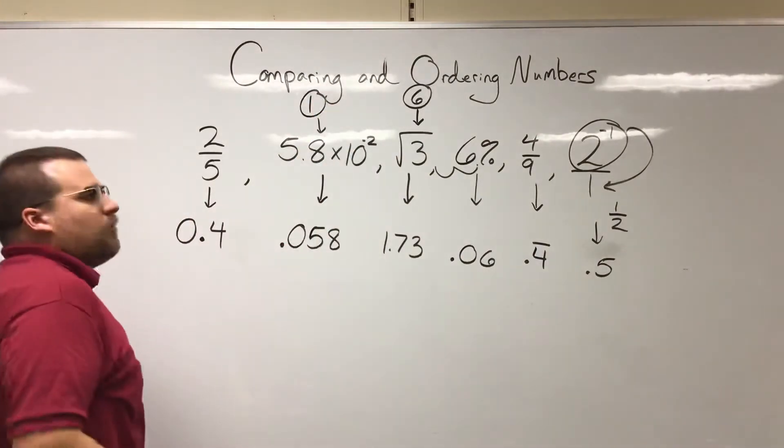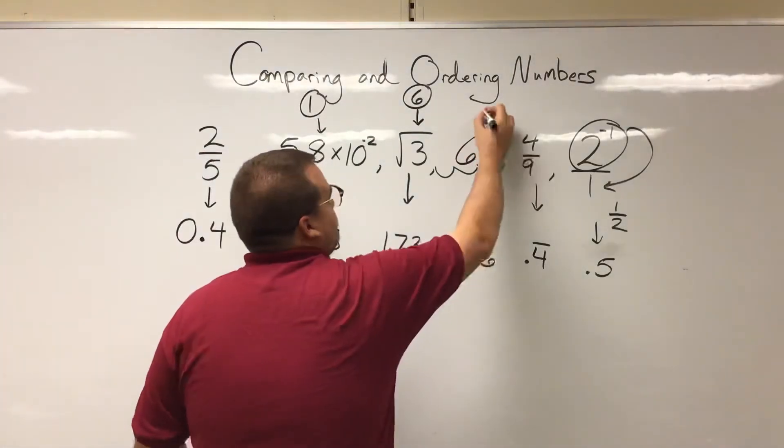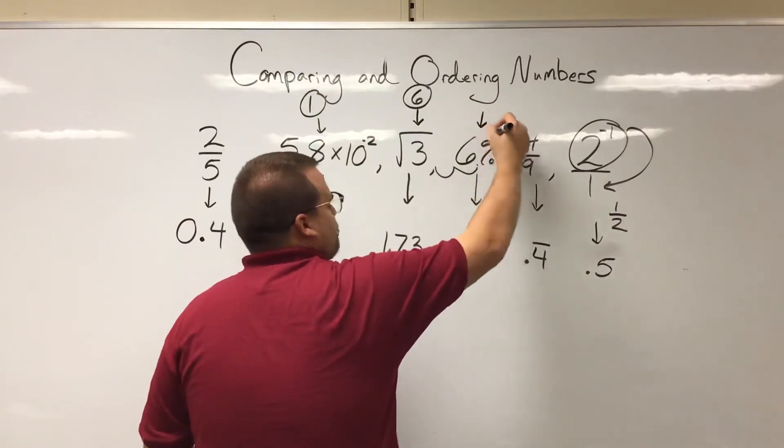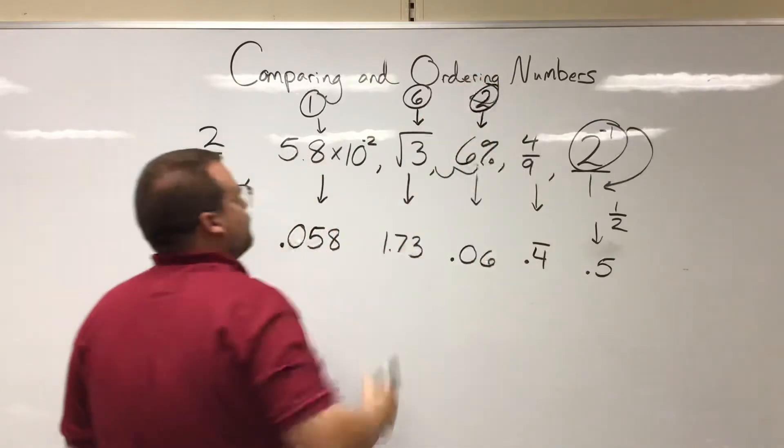So there's number one, the least. And that other number with the zero in front of it here, that's going to be the second smallest. So that will be number two in our order.